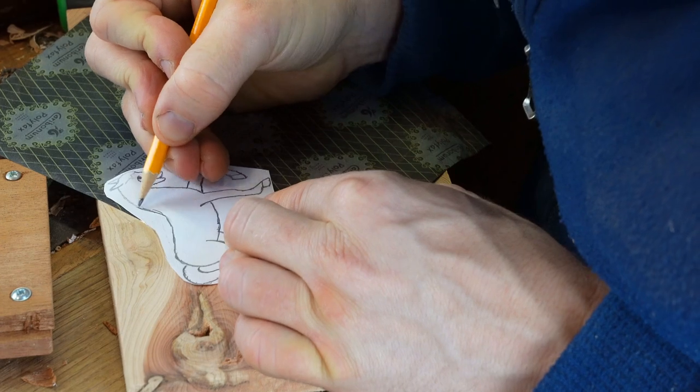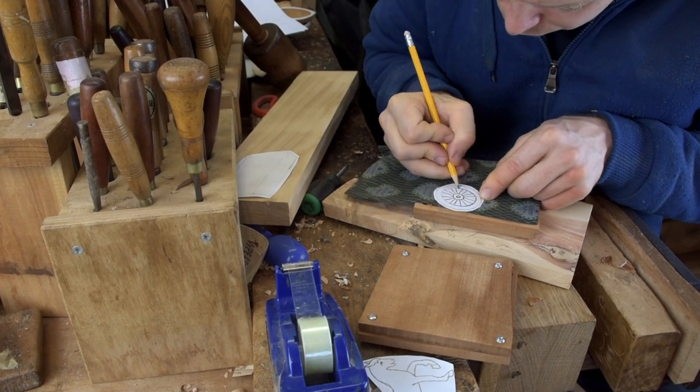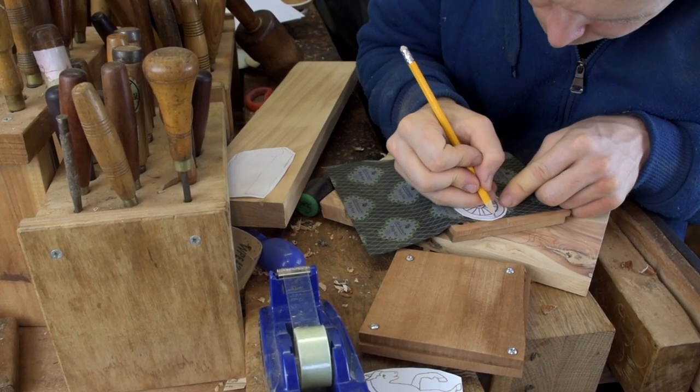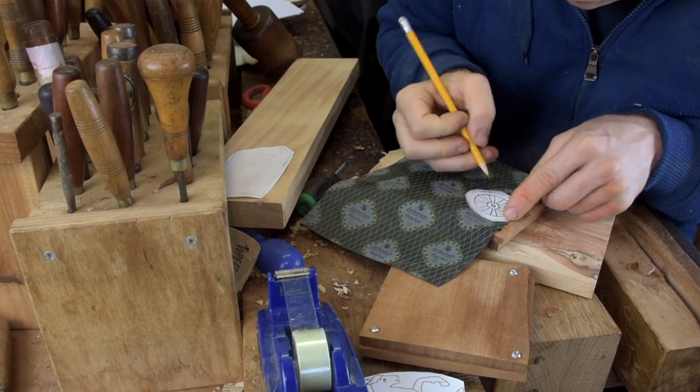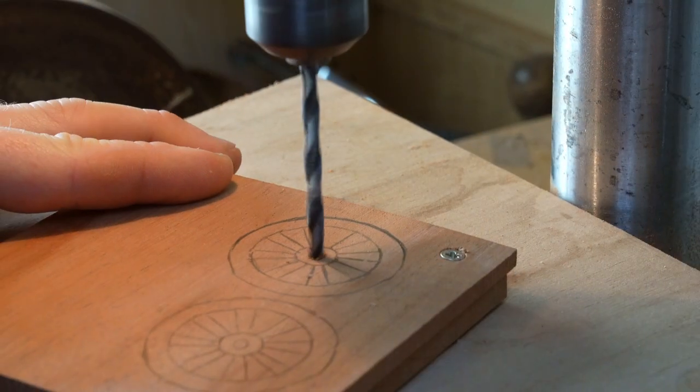The process for making these different projects starts out with a drawing and we transfer that drawing onto the woods using carbon paper. Draw around your design and then that transfers onto the wood itself.